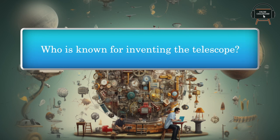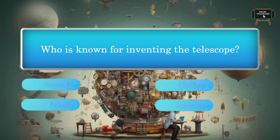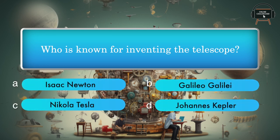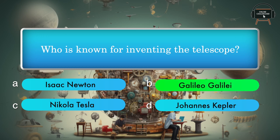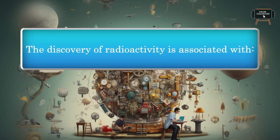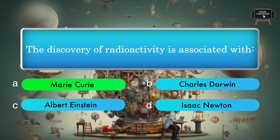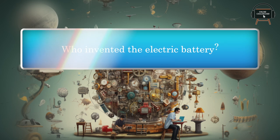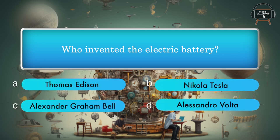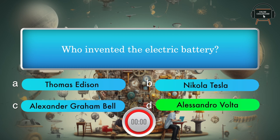Who is known for inventing the telescope? Isaac Newton, Guglielmo Marconi, Galileo Galilei, Nikola Tesla, Johannes Kepler. Answer: Galileo Galilei. The discovery of radioactivity is associated with: Marie Curie, Alexander Graham Bell, Alessandro Volta. Answer: Alessandro Volta.